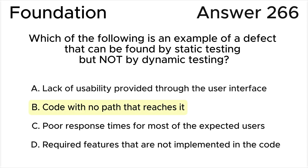The correct answer is B. According to the ISTQB syllabus, a code review can detect code that cannot be reached by any path. Dynamic tests can only exercise reachable code and cannot determine that code cannot be reached without running every possible combination of inputs and input states, which is impractical for real cases.